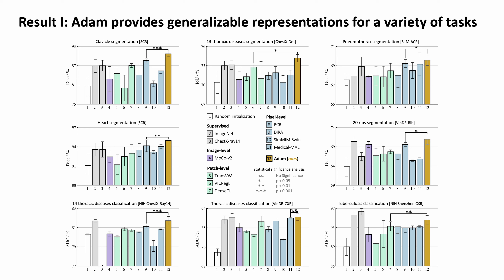We compare ADAM with a diverse range of state-of-the-art self-supervised methods as well as two fully supervised models across different tasks. As seen, ADAM provides superior transfer performance over all baselines across all tasks, with stars indicating statistical significance of the results.